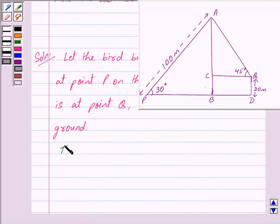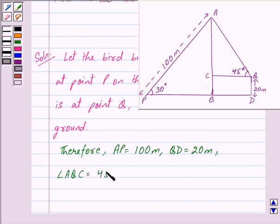Therefore we have AP is equal to 100 meters, angle APC is equal to 45 degrees, and angle APB is equal to 30 degrees.